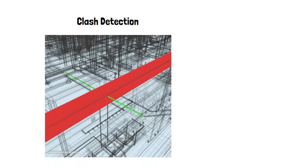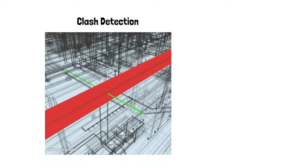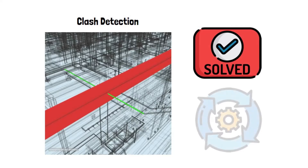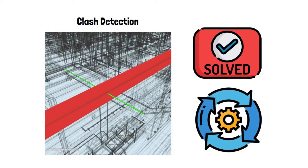Clash Detection: The structural, architectural, mechanical, electrical, and plumbing projects are incorporated into one shared model. Clashes are identified in the early stages of the project and resolved before actual construction starts. By doing so, construction teams can work more effectively and unexpected cost increases and time delays can be mitigated.